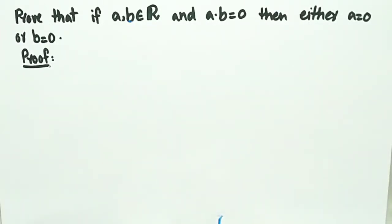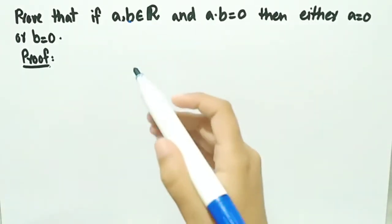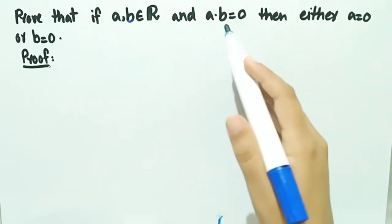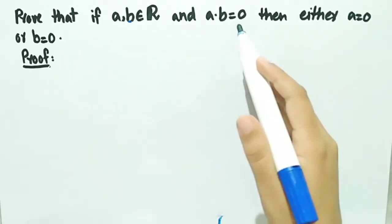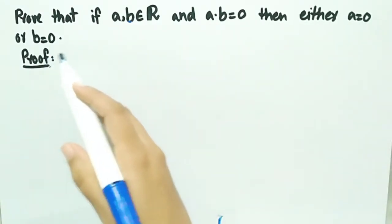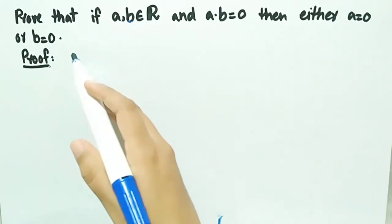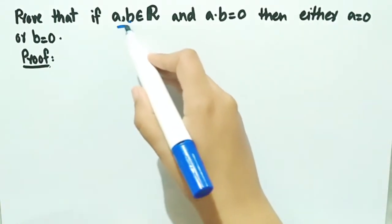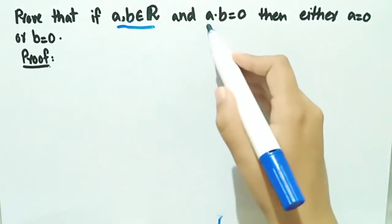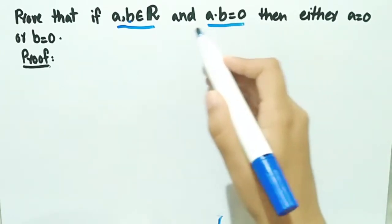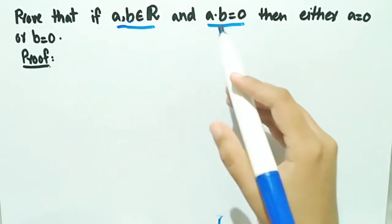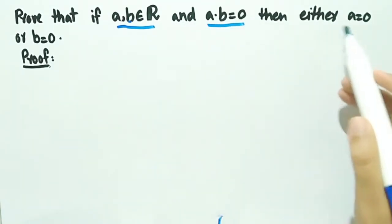In this video we will prove that if a and b are any real numbers and the product ab is equal to zero, then either a is equal to zero or b is equal to zero. Here a and b belong to real numbers and ab = 0 is the given data, and we have to prove that either a = 0 or b = 0.